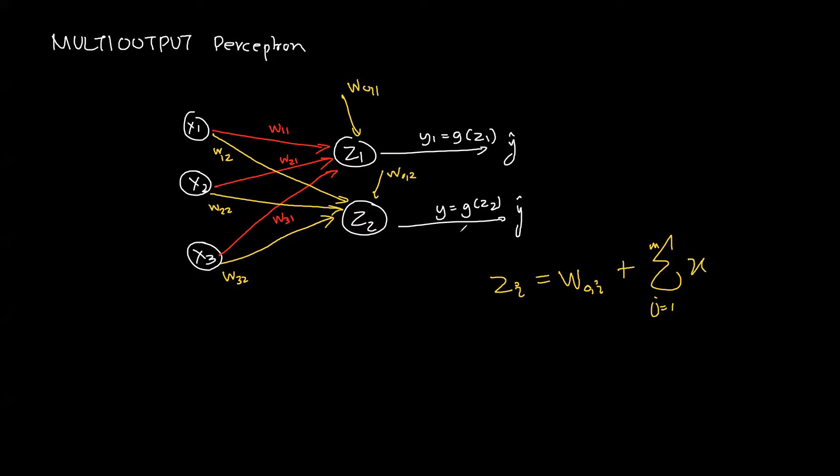So this particular thing will vary plus summation of j equals 1 to m, because all of the inputs will go to all of the individual summation functions. Here I will have x_j and w_ji. So for the first one I would have z_1 equals to w_naught.